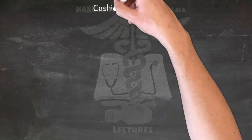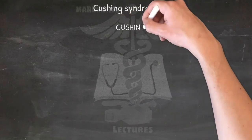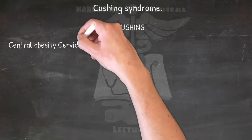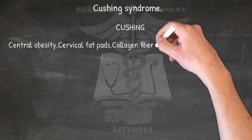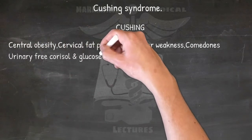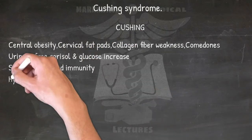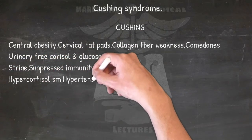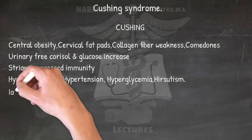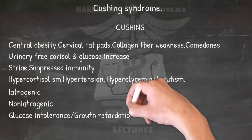Cushing syndrome: CUSHING — Central obesity, Cervical fat pads, Collagen fiber weakness, Comedones/acne, Urinary free cortisol and glucose increase, Striae, Suppressed immunity, Hypercortisolism, Hypertension, Hypoglycemia, Hirsutism, Iatrogenic/non-iatrogenic, Glucose intolerance, and Growth retardation.